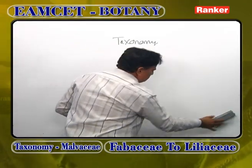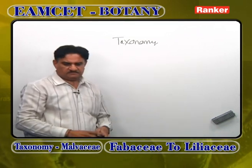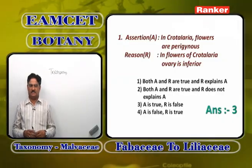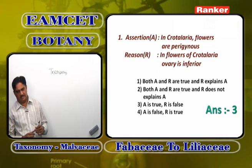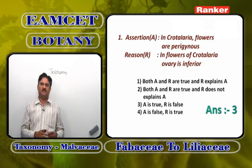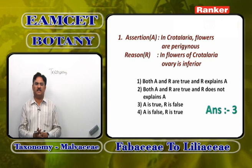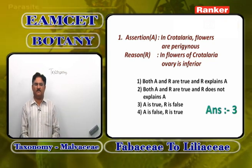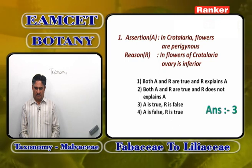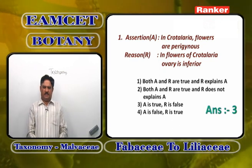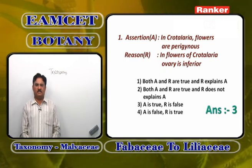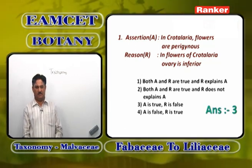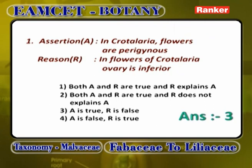So in Crotalaria, flowers are perigynous — thalamus is cup-shaped, ovary is at the center attached only at the base, remaining floral parts are on the rim. Position of ovary is half superior or half inferior. But ovary being inferior is wrong — ovary is always superior. Crotalaria is the only plant in Fabaceae with a superior ovary. Answer is 3: A is true, R is false.